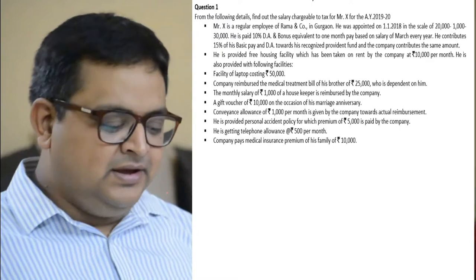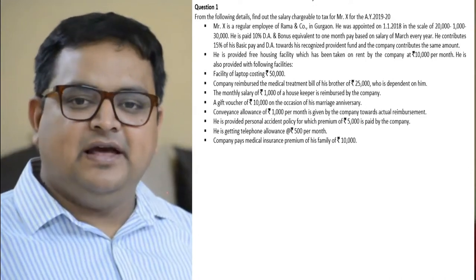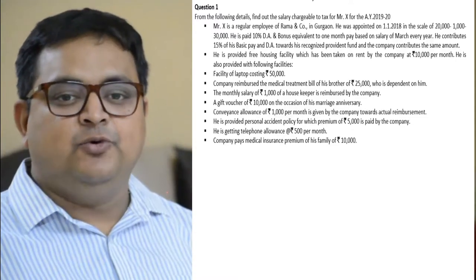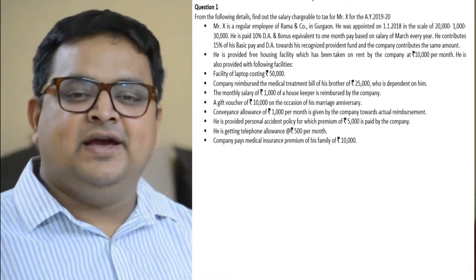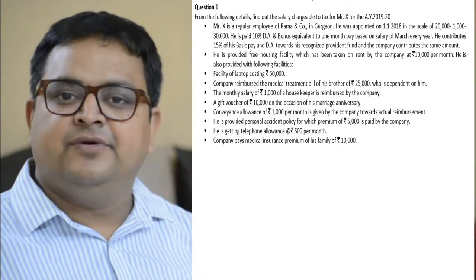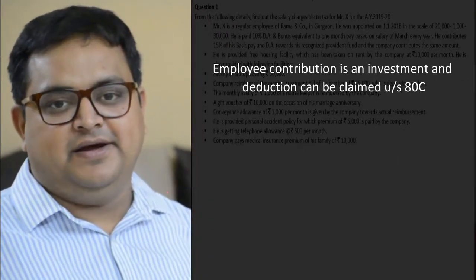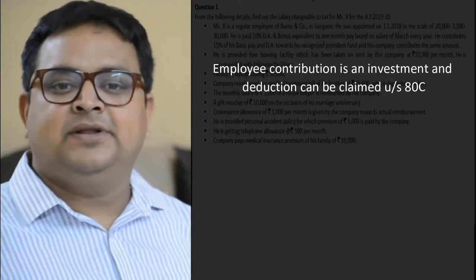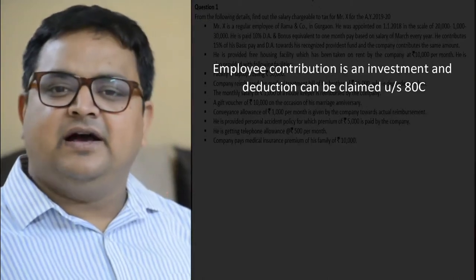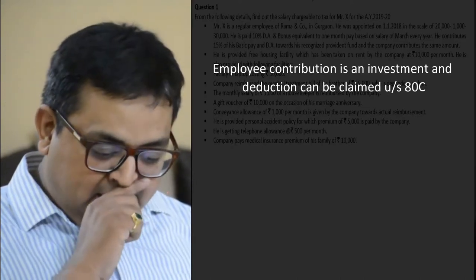Bonus equivalent to one month's pay based on salary — here salary means basic salary. So the employee gets a bonus equal to one month's basic salary. So far we have: basic salary, DA, and bonus. He also contributes 15% of basic pay and DA towards RPF. If the employee is contributing, this is not his income — he is investing from his own income. This goes under deductions under section 80C, maximum ₹1.5 lakh, but since we are only asked for salary income, we won't discuss 80C here.